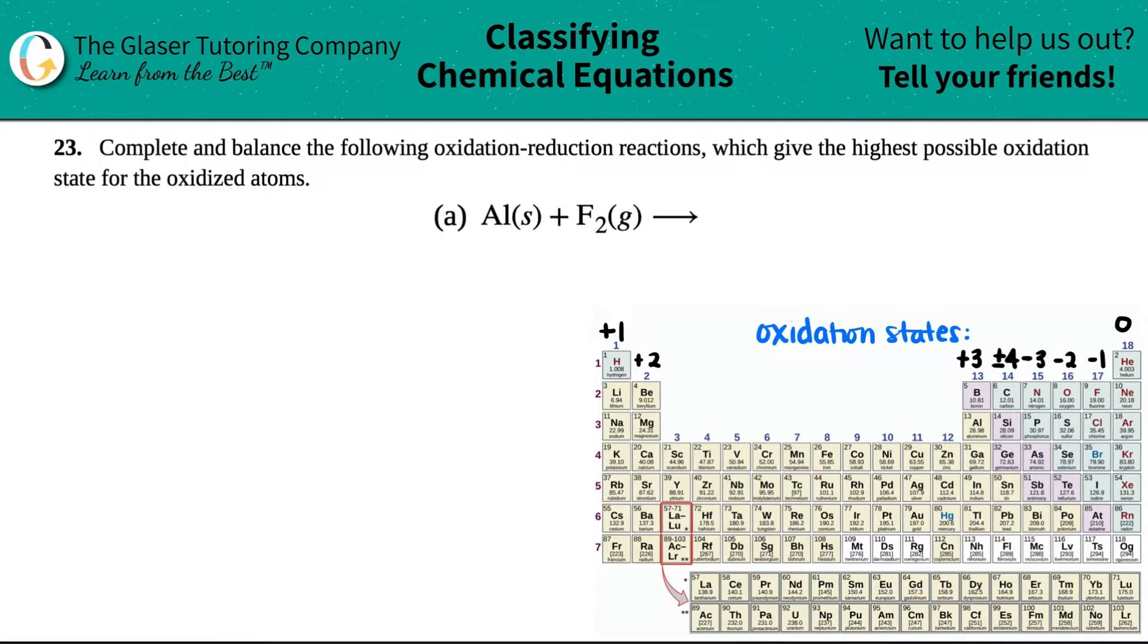Number 23: Complete and balance the following oxidation-reduction reactions, which give the highest possible oxidation state for the oxidized atom. And then we have letter A. So we have to finish this reaction under the pretenses of what they tell us. They told us that we need the highest possible oxidation state for the oxidized atom.